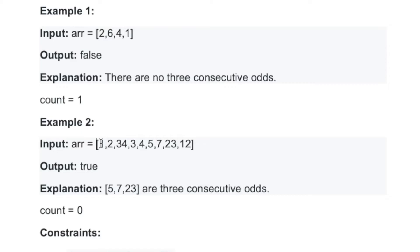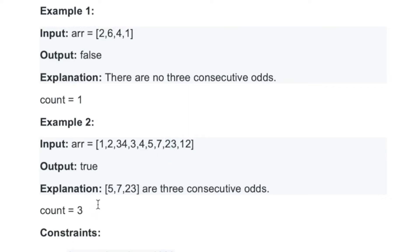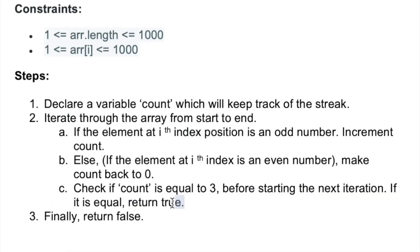Now let's trace example two. The first element one is odd, so count increments to one. The second element is even, count resets to zero. The next element is even, count stays zero. The next element three is odd, count becomes one. The next element is even, count resets to zero. The next odd element makes count one, seven makes count two, and the following odd element makes count three. As soon as count equals three we return true. If the loop completes without returning true, we return false.